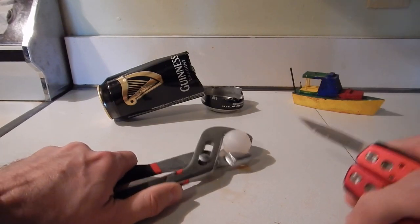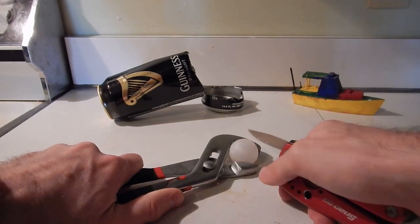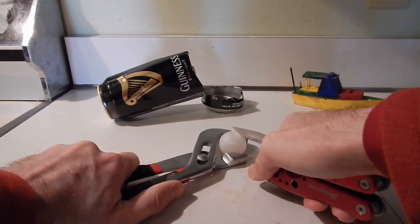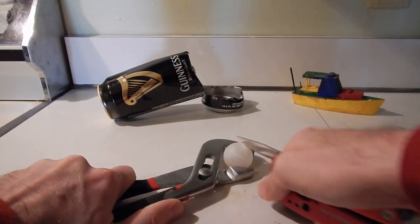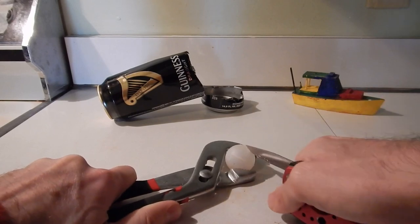Okay, that other knife wasn't sharp enough, so I've got a couple of new tools here. Let's see if I can cut into this Guinness widget ball thing that comes out of the can.